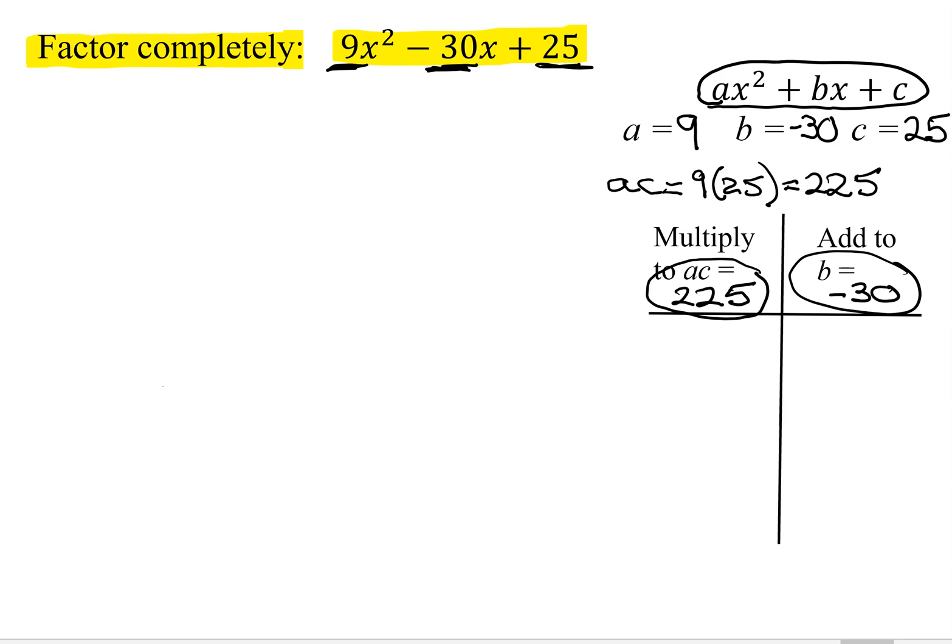And I always do this systematically. If you can see the numbers quickly, fine. But if not, I'm going to start with 1 and the number. So in this case, it has to be negative 1 and negative 225. Those will definitely multiply to positive 225. Negative 1 plus negative 225 is equal to negative 226. Definitely not the number I'm looking for.